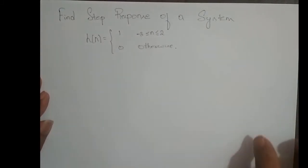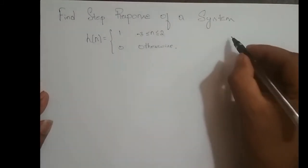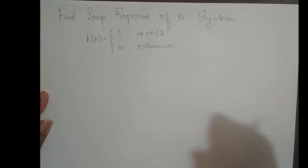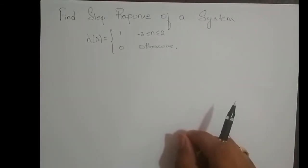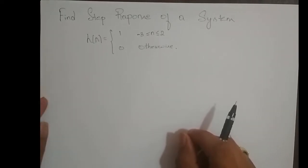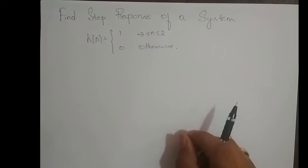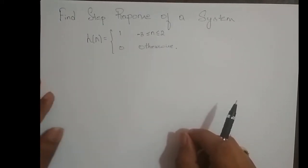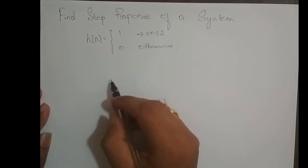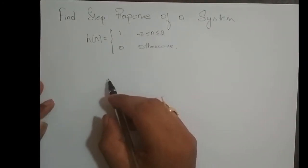Basically, one of the ways to represent a system is in terms of its impulse response. Whenever we say impulse response H of n, it says something about the system. H of n is nothing but a system — it is one of the ways to represent a system in terms of its impulse response.